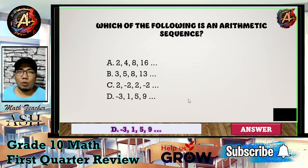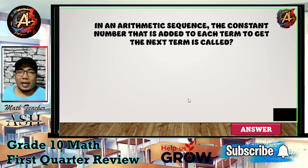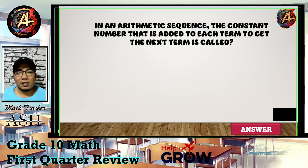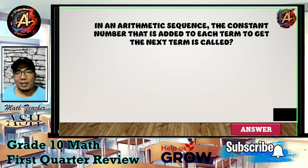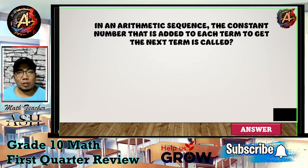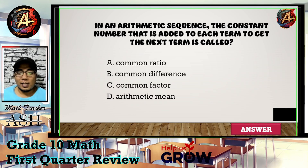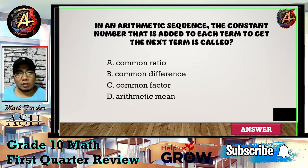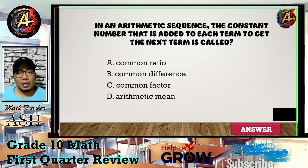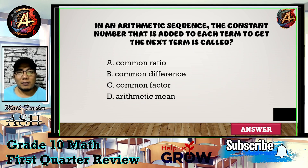Question number six: In an arithmetic sequence, the constant number added to each term to get the next term is called — is it A) common ratio, B) common difference, C) common factor, or D) arithmetic mean? I'll give you five seconds to think about your answer.